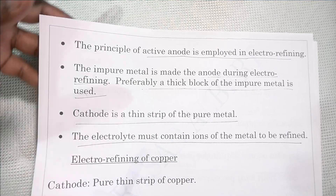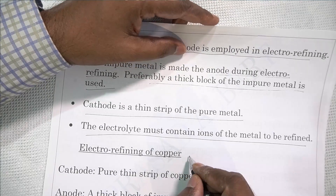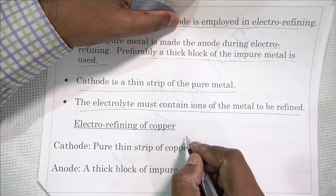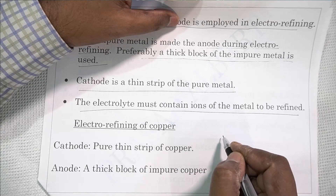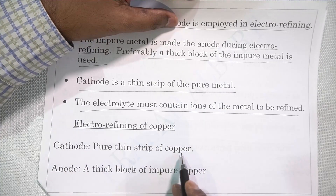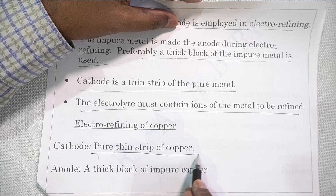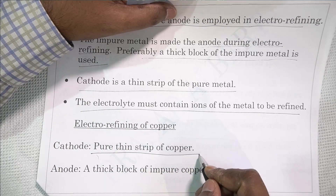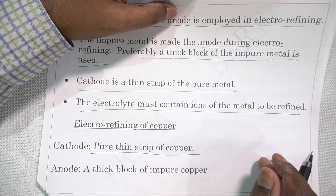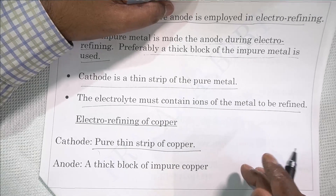Electrorefining of copper is a typical example mentioned in the class 10 syllabus. We take a pure thin strip of copper as the cathode. Why a thin strip? Because it will grow in size as metal ions get discharged there.